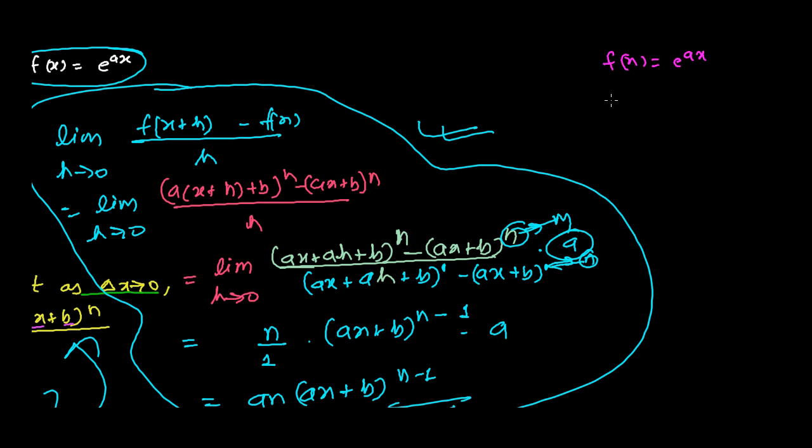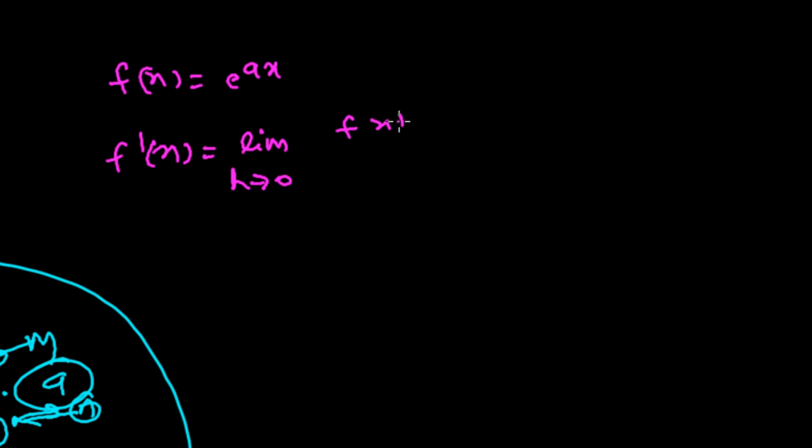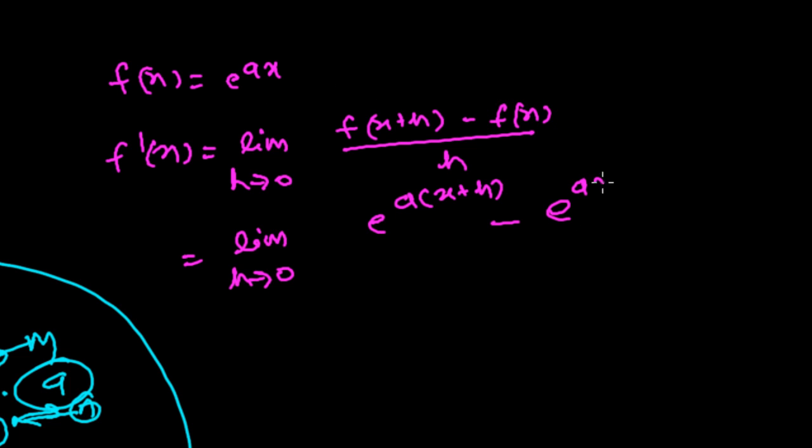This time I'm going to use the definition directly. So f'(x) = lim(h→0) [f(x+h) - f(x)]/h. Further, when you insert x+h in this function, it becomes e^(a(x+h)). So we have e^(a(x+h)) - e^(ax), all divided by h.